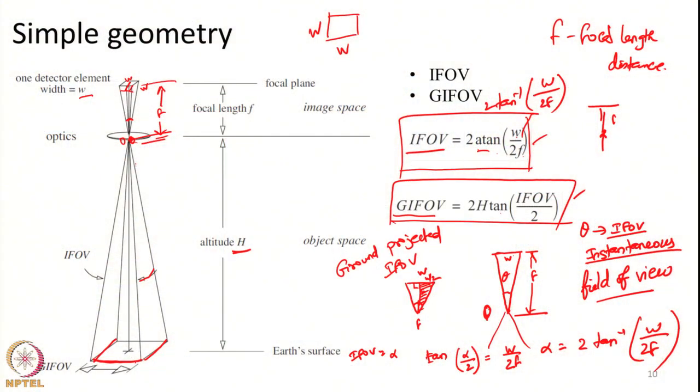In the last class we discussed about how an image is acquired from satellites in geostationary orbits, where the scanner has to move in both the north-south as well as east-west direction to acquire a 2-dimensional image. We also saw some important concepts such as IFOV, GIFOV, and FOV.